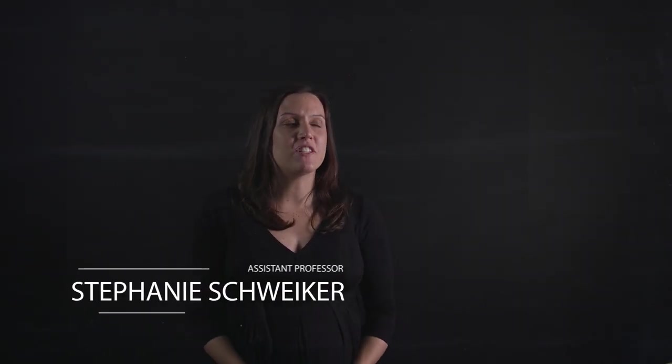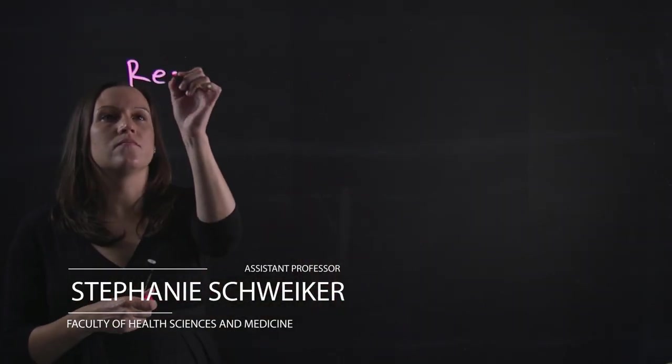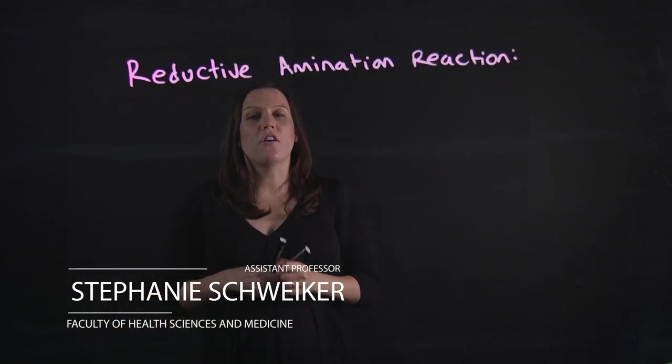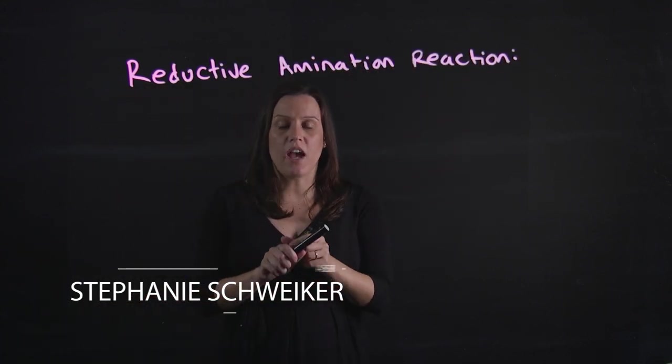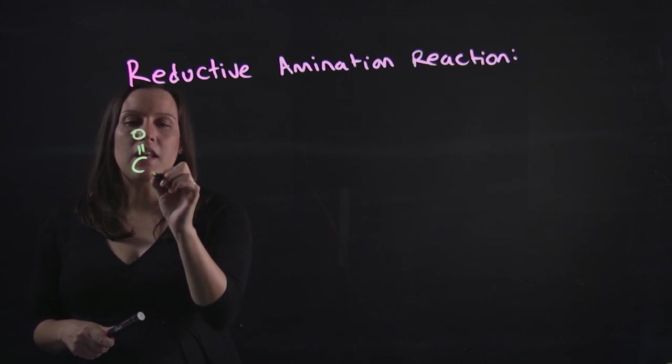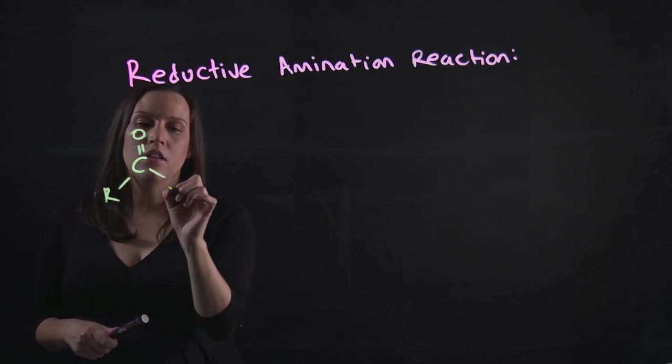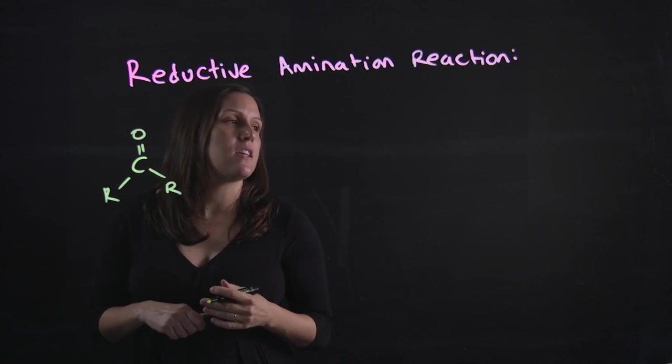Okay, so this video is going to be about reductive amination. A reductive amination is when you have a carbonyl group. This carbonyl group can be an aldehyde or a ketone. I'll draw it as a ketone for this explanation.